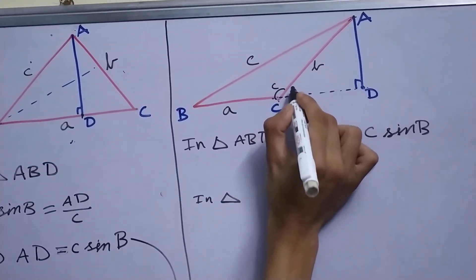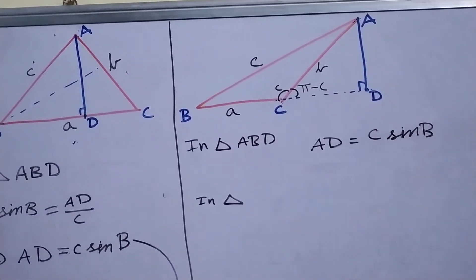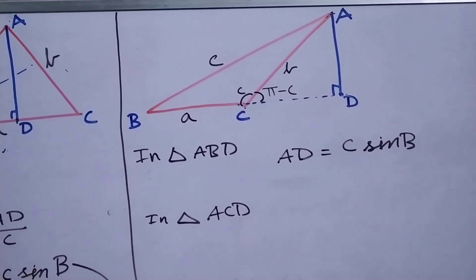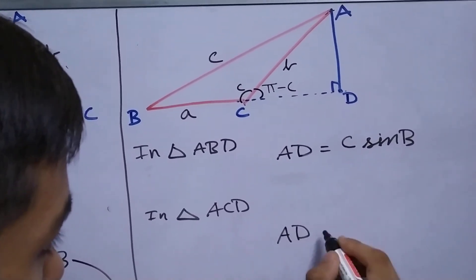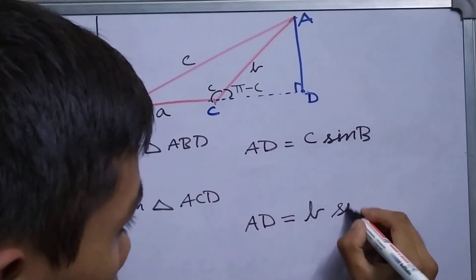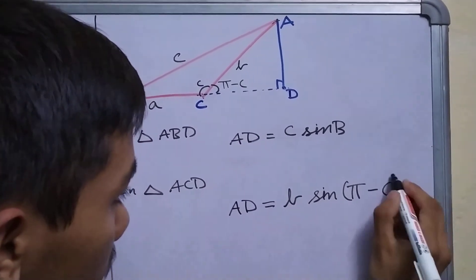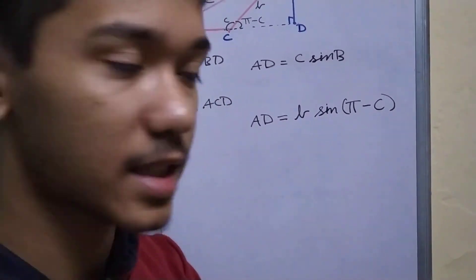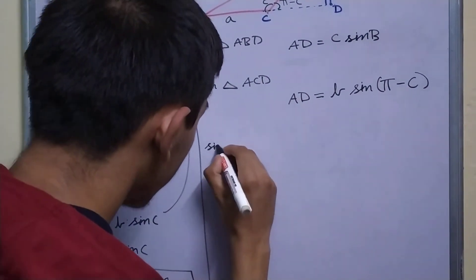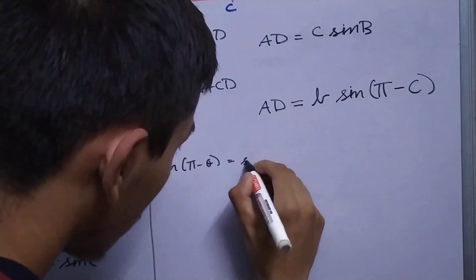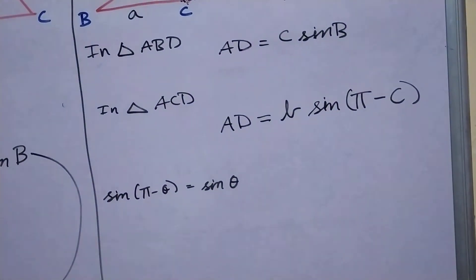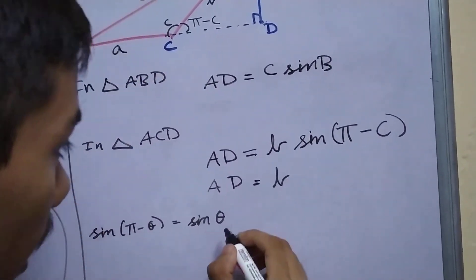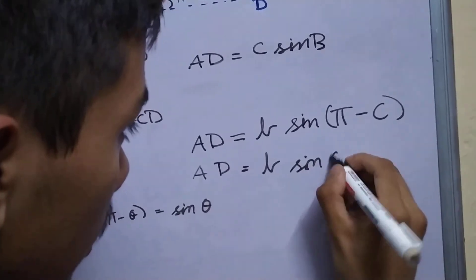So if this angle is capital C, this is π minus capital C. So in ACD, you can say that AD is equal to b sin(π - C). And here we will be using an important property of sine: that sin(π - θ) is equal to sin θ. So in this case θ is C. Using this, we can say that AD is equal to b sin C.